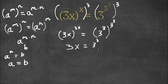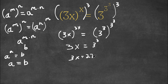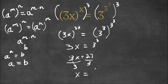Meaning this would equal 3x is equal to 3 to the power of 3. Now we're going to do this in two ways. Our first way is doing 3 to the power of 3, which is 27. So we get 3x is equal to 27. And if we divide both sides by 3, this cancels out and we get x is equal to 27 divided by 3, which is 9.